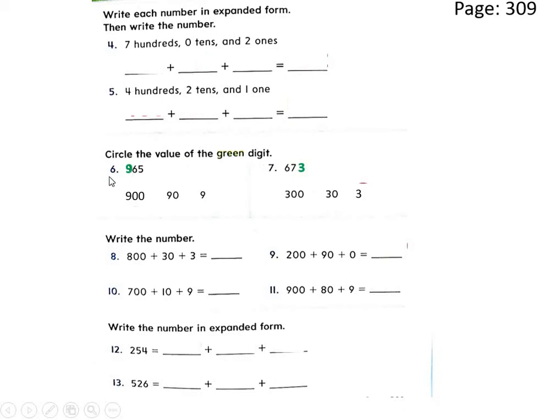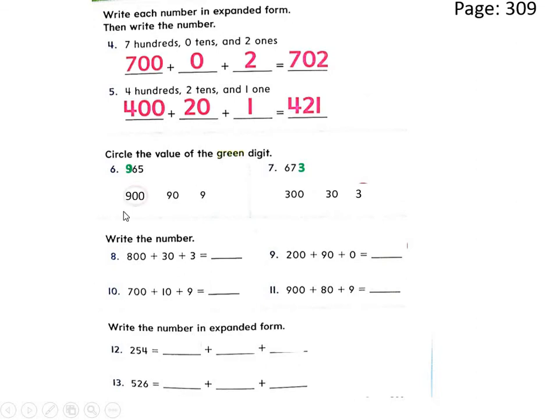Question number six: the number is nine hundred sixty-five, and the digit is nine. What is the value of nine in this number? Nine is in the hundreds place, so its value is nine hundred.